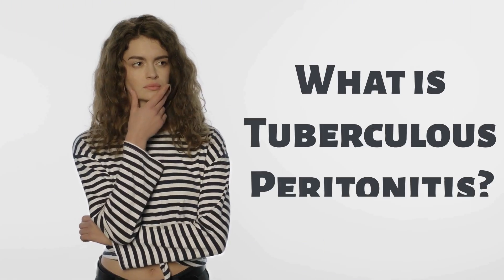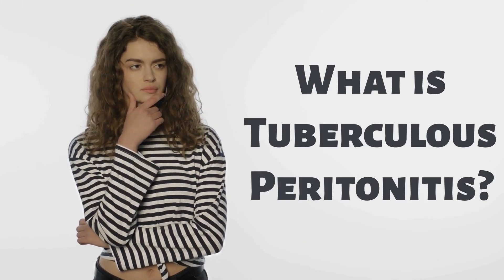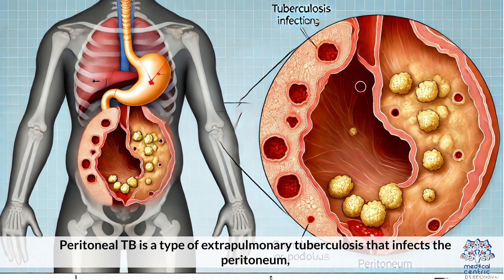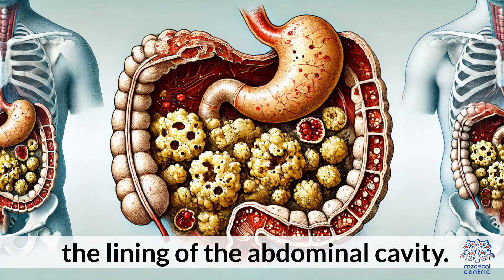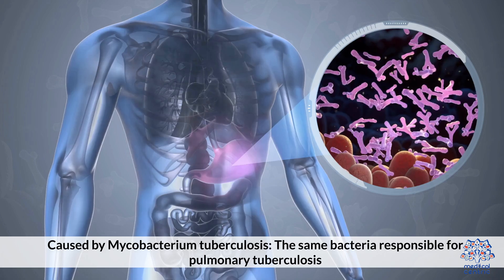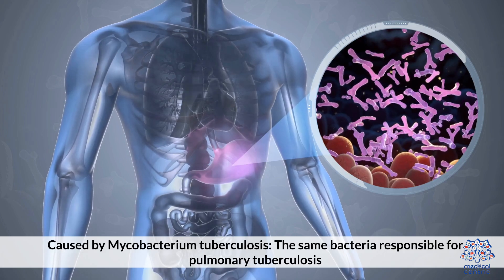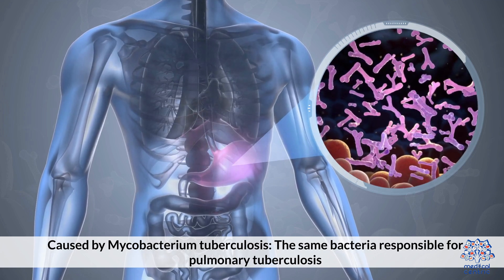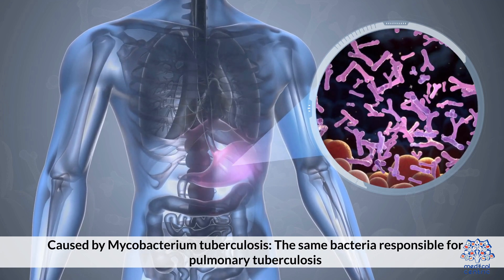What is Tuberculosis Peritonitis? Peritoneal TB is a type of extrapulmonary tuberculosis that infects the peritoneum, the lining of the abdominal cavity. It is caused by Mycobacterium tuberculosis, the same bacteria responsible for pulmonary tuberculosis.